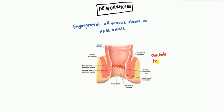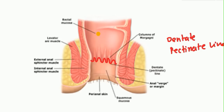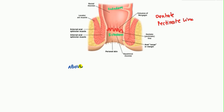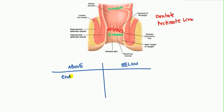The pectinate line is really important because early on in embryology, it's a combination of two different embryological parts. Above the pectinate line you have the endoderm, and below the pectinate line you have the ectoderm. I'm going to draw a table comparing above and below the pectinate line. Above is derived from the endoderm, and below is derived from the ectoderm.